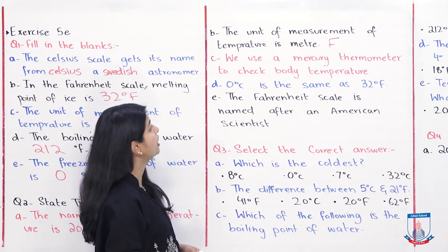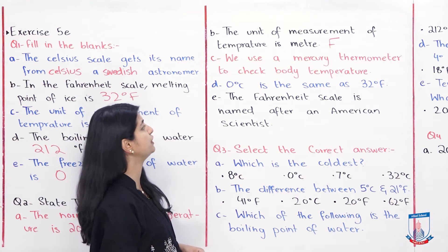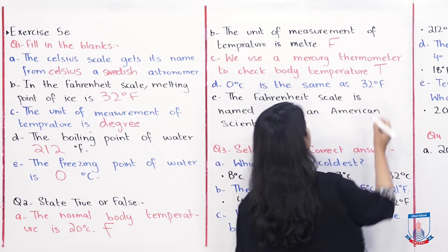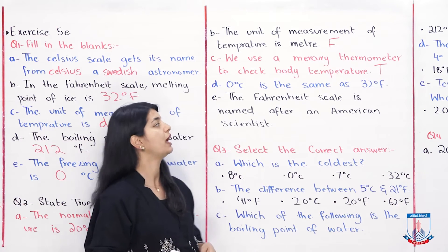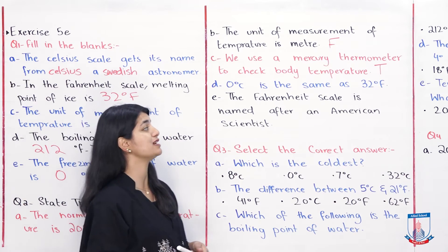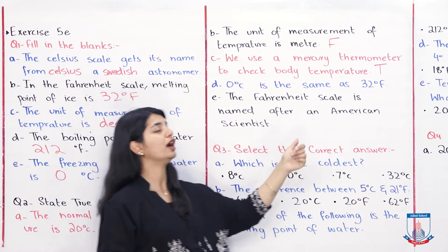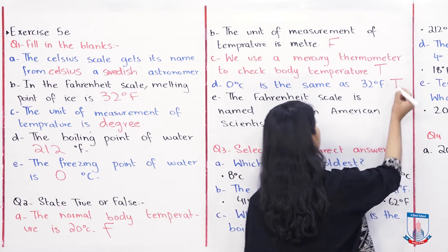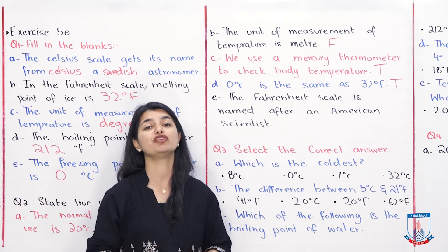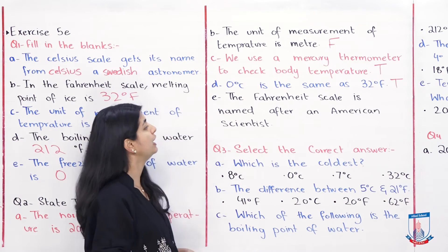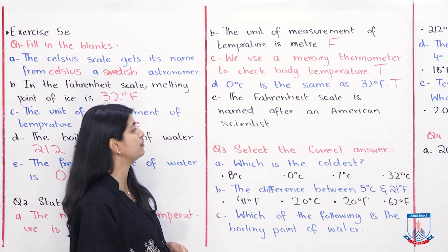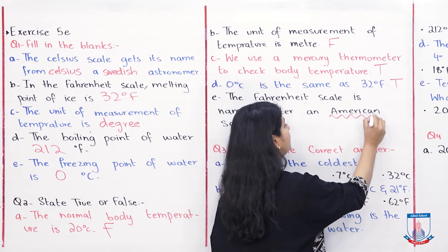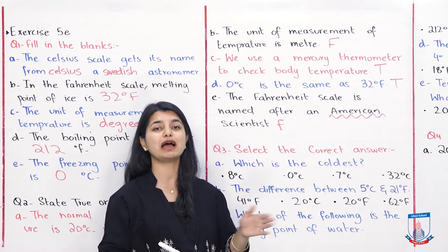Part C: we use a mercury thermometer to check body temperature — yes, this is true; a mercury thermometer is used. Part D: 0 degrees Celsius is the same as 32 degrees Fahrenheit — this is true, because this is the melting point of ice or freezing point of water, which is the same thing. Part E: the Fahrenheit scale is named after an American scientist — this is false; the scientist was German, not American.